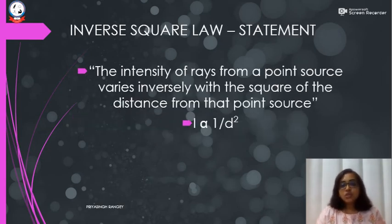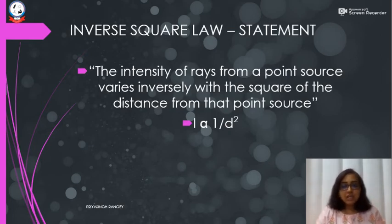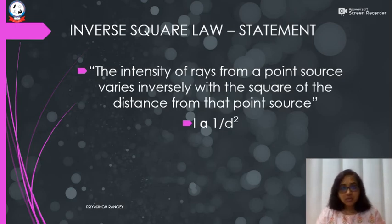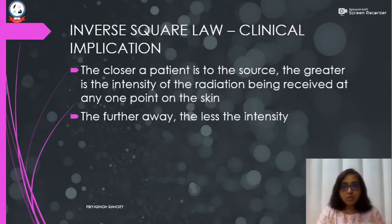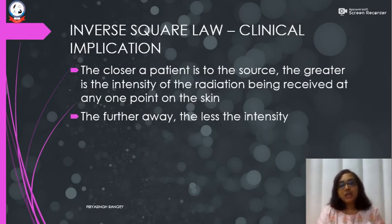The next is the inverse square law. It states that the intensity of rays from a point source varies inversely with the square of the distance from that point source. Basically, intensity I is proportional to 1/d², where d is the distance between the point source and the surface of the skin. The clinical implication is that the closer a patient is to the source, the greater is the intensity of radiation being received at any point on the skin.